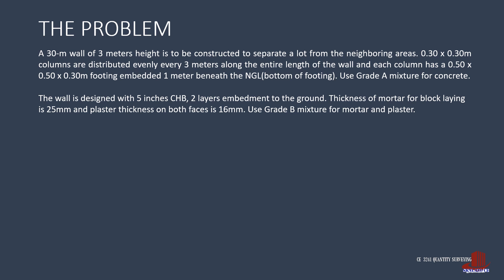This gives a complete view of the whole wall. The second part of the problem discusses the details of the wall. The wall is designed with 5 inches concrete hollow blocks, two layers embedment to the ground. Thickness of mortar for block laying is 25 millimeters, and plaster thickness on both faces is 16 millimeters. Use grade B mixture for mortar and plaster.